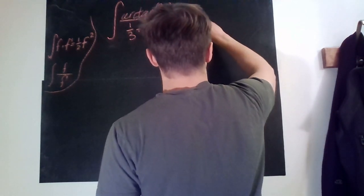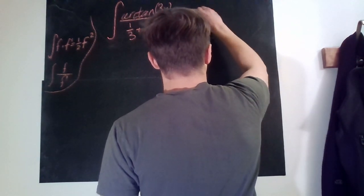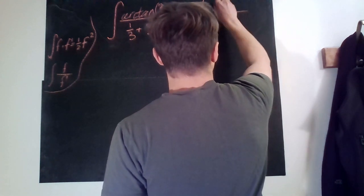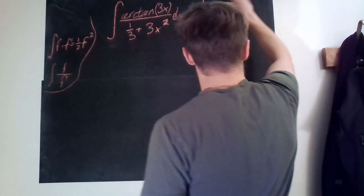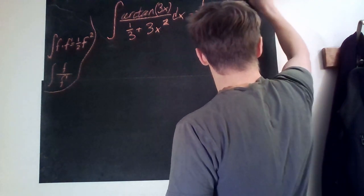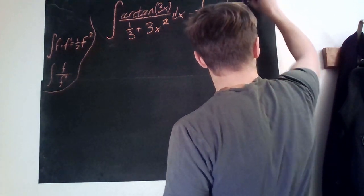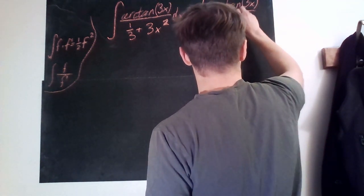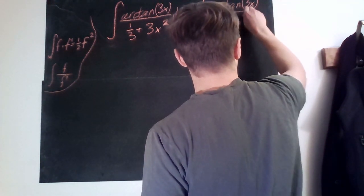So we would then just have 3 times arctan of 3x and then divided by 1 plus 9x squared.